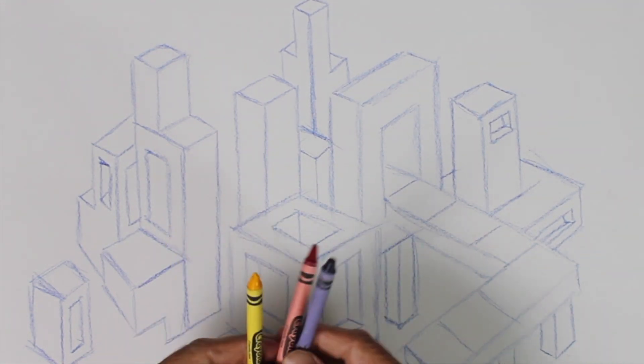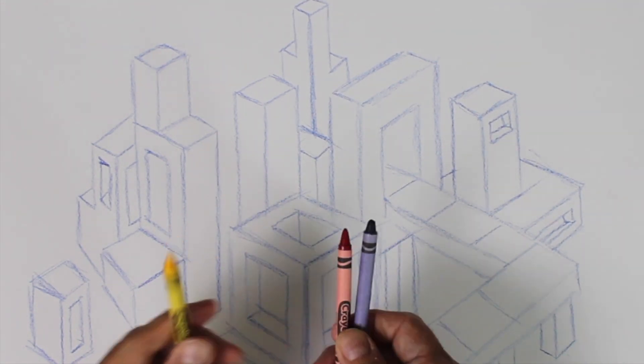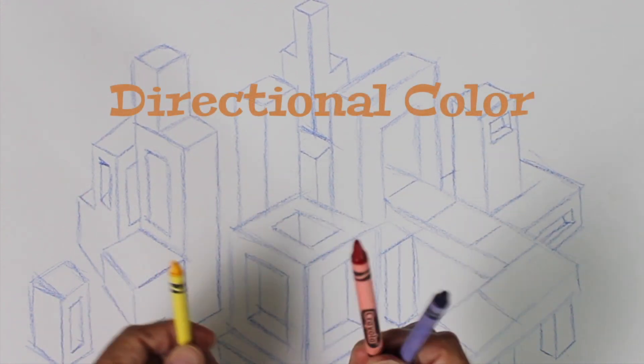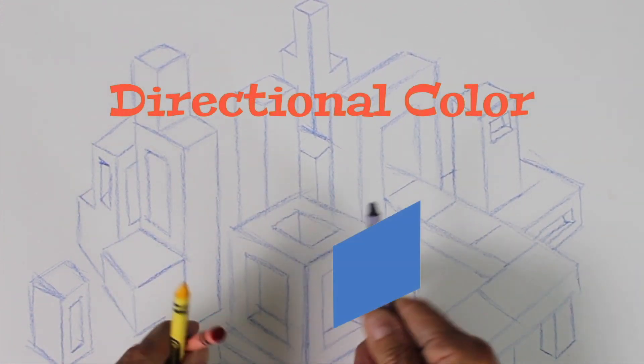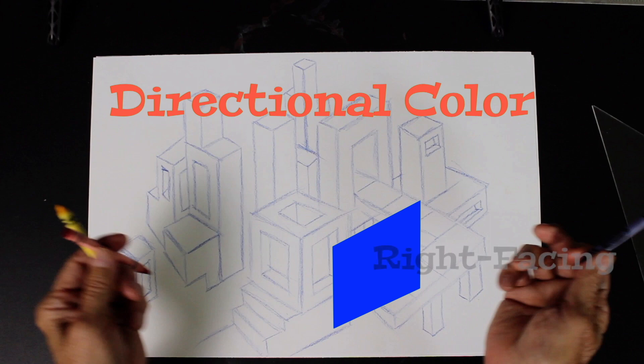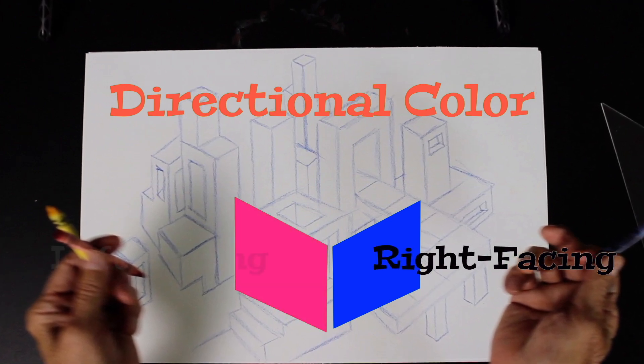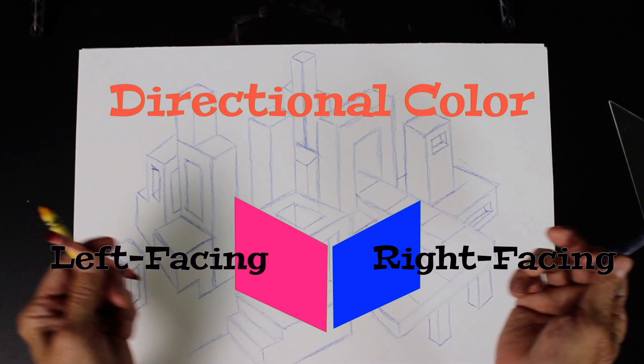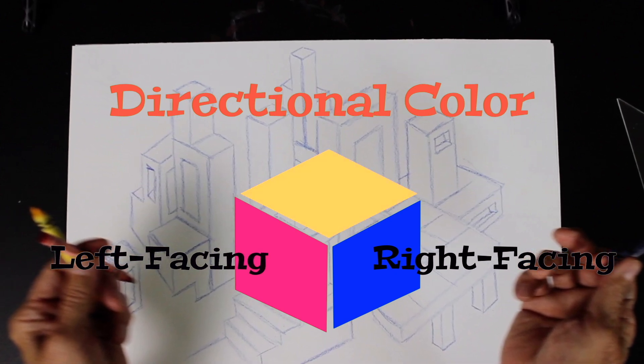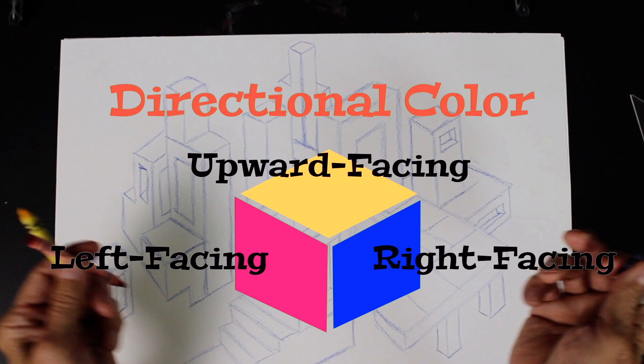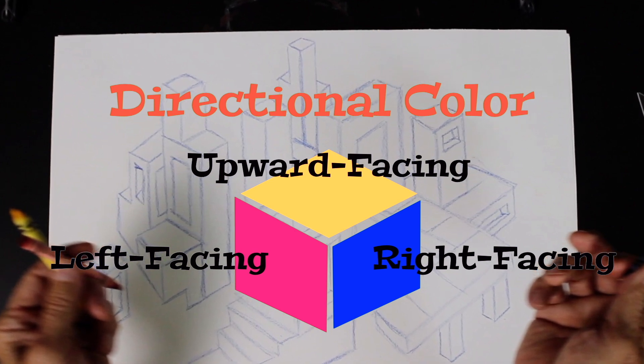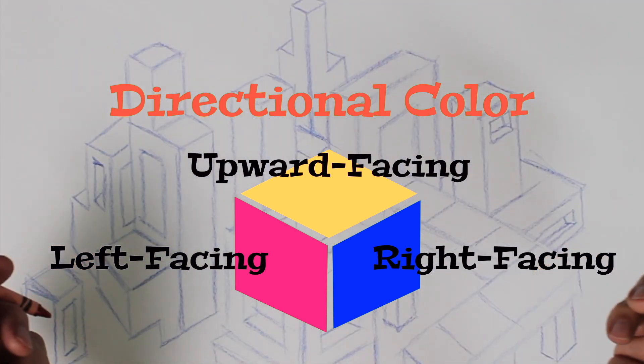Directional color really brings these to light. So I've got three and I'm going to choose a different surface for each facing object. So if it's facing right, it's going to be blue. If it's facing left, it's going to be red. And if it's facing upward, we're going to make sure we color that in with yellow. And if you don't understand what I just said, let's demonstrate.